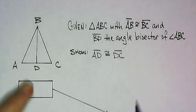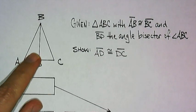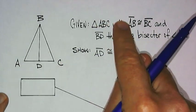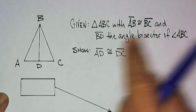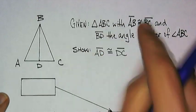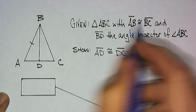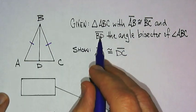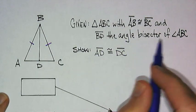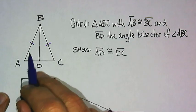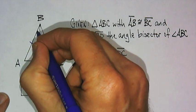The first thing I want to do is have a diagram. On this diagram, I want to mark all the information I know is true. I have a triangle, and I know that AB is congruent to BC. I know that BD is the angle bisector of ABC, so the angle bisector means that it cuts the angle right in half.